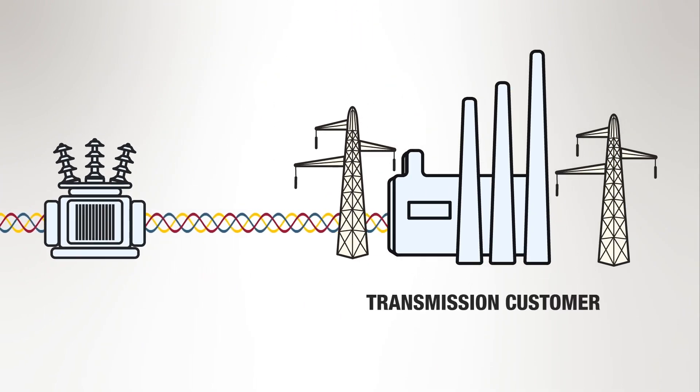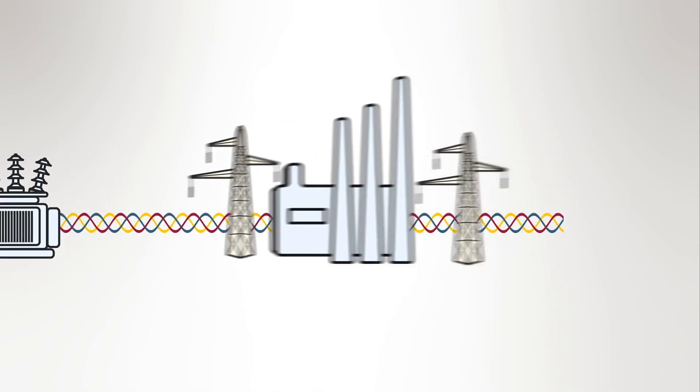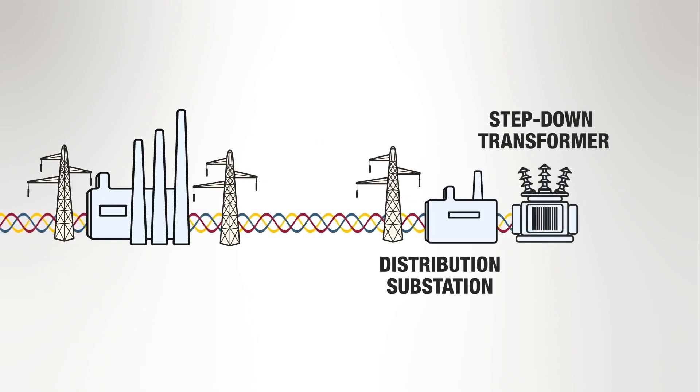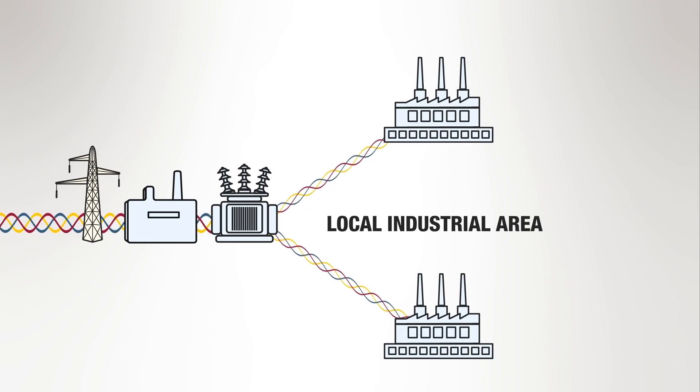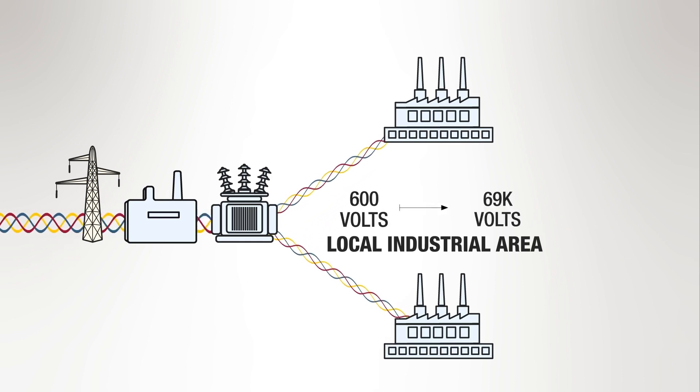The transmission customer then receives the power at the higher voltage. Very few end customers require this high voltage or have the equipment to handle it. When the power exits the transmission customer, it will enter a distribution substation where a step-down transformer reduces the voltage for use in a local industrial area. This medium voltage power is used by industrial customers such as factories and other large users. Medium voltage customers use power ranging from 600 volts to 69,000 volts or 69 kV.